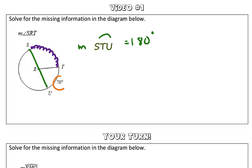So, we are given that arc TU is 70 degrees. So to find the missing measurement of arc ST, we can go ahead and take 180 degrees, or the measure of arc STU, and subtract what we know, the 70 degrees, and what we're left with is 110 degrees.